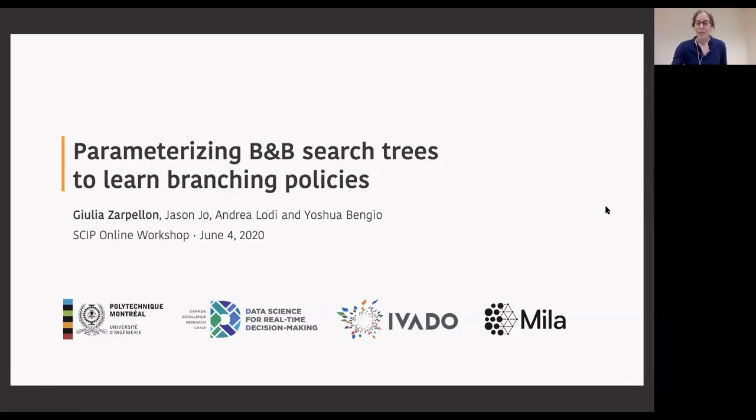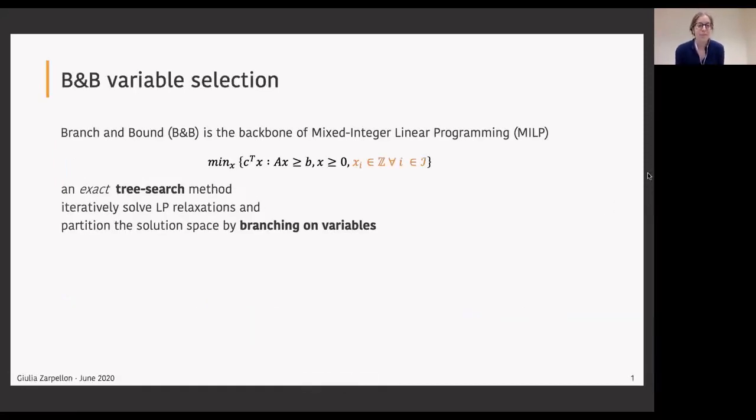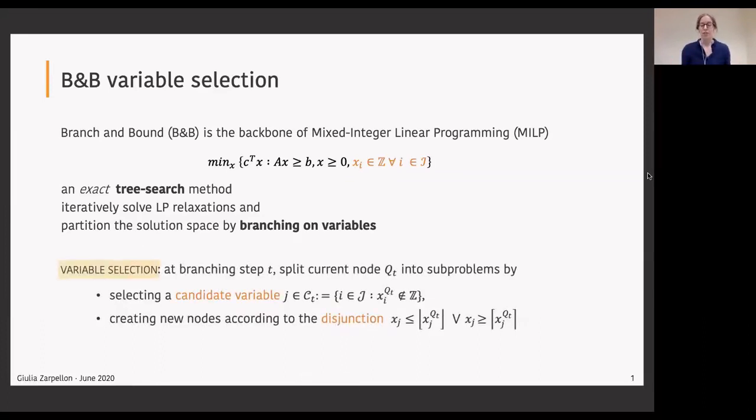As all of you probably know, branch and bound is the algorithmic backbone when we want to solve a mixed integer linear problem. So a problem in which we usually minimize a linear objective function under a set of linear constraints and we require some variables to be integer. Branch and bound is an exact tree-search method in which we iteratively solve a relaxation of the problem at hand and we partition the solution space in a divide and conquer approach by branching on variables.